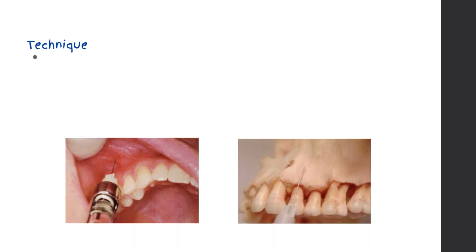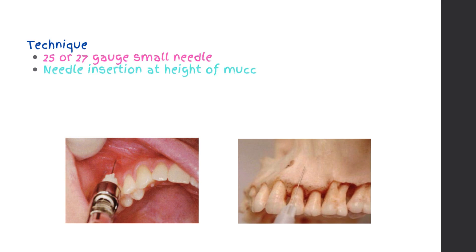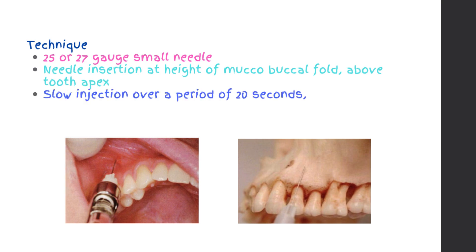Technique: 25 or 27 gauge small needle. Needle insertion at height of muco-buccal fold above tooth apex. Slow injection over a period of 20 seconds. Do not permit the tissue to balloon.